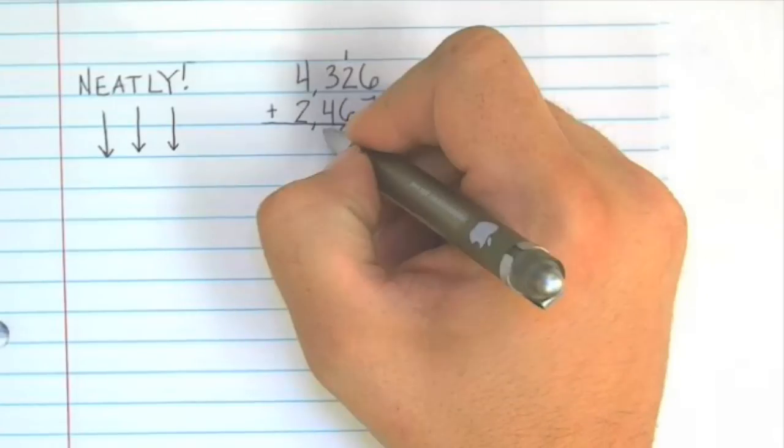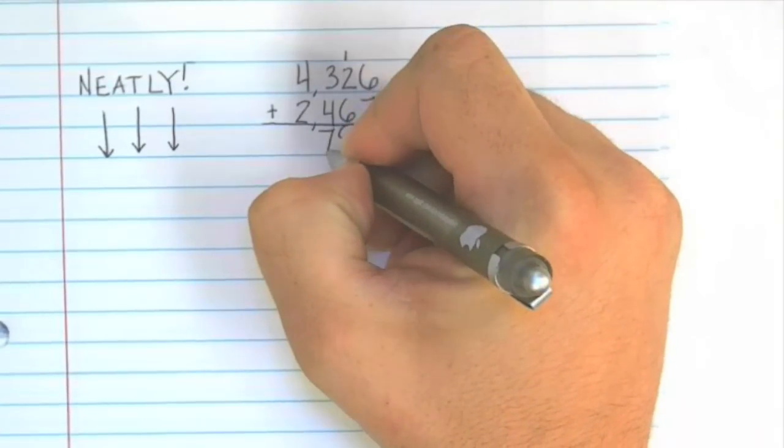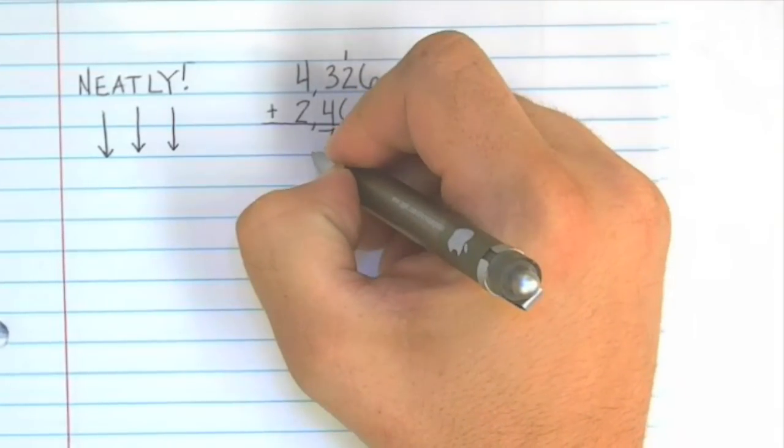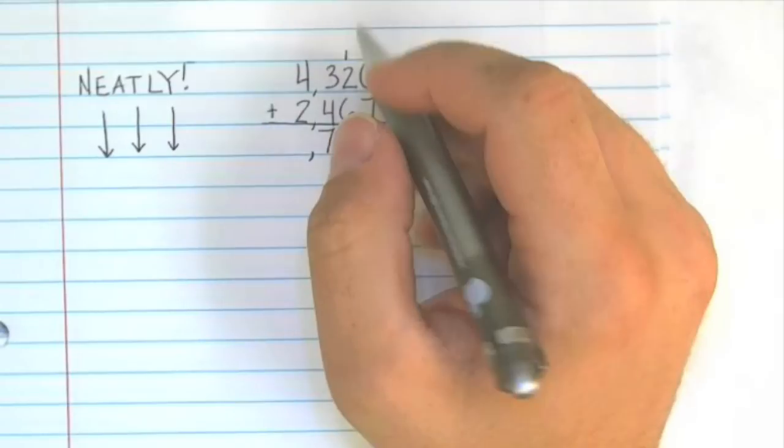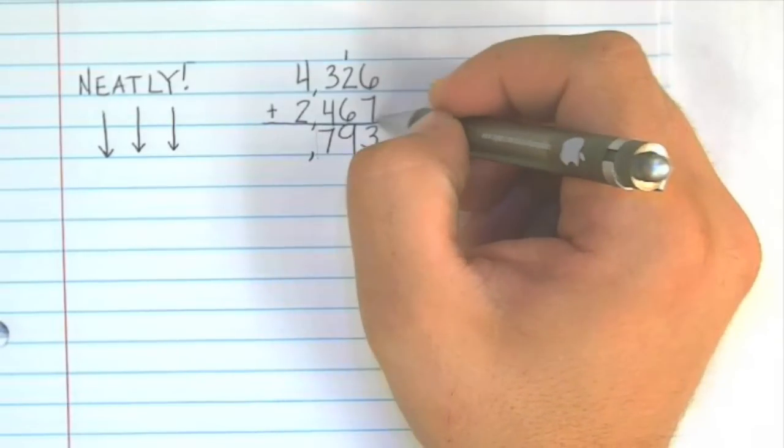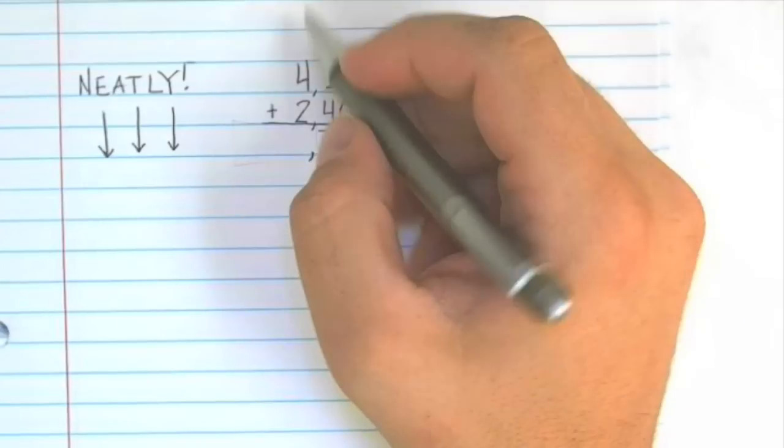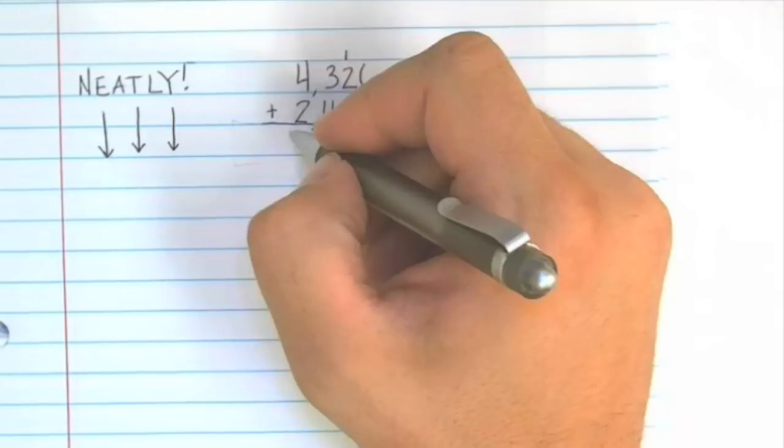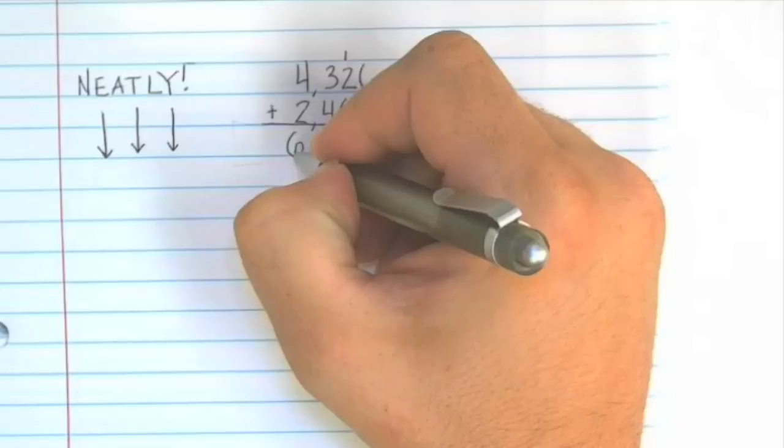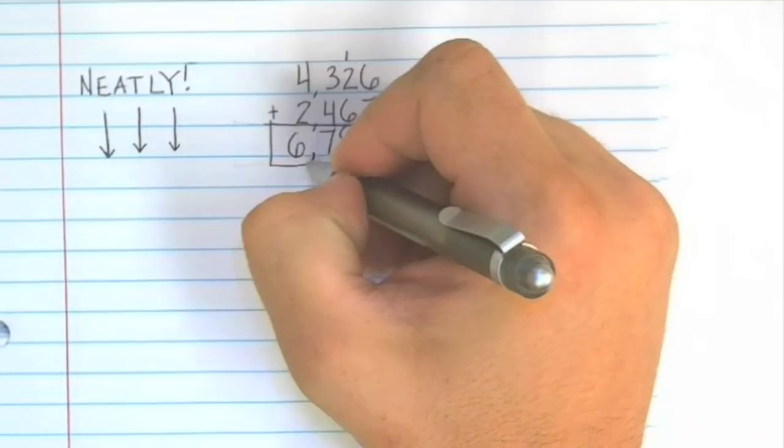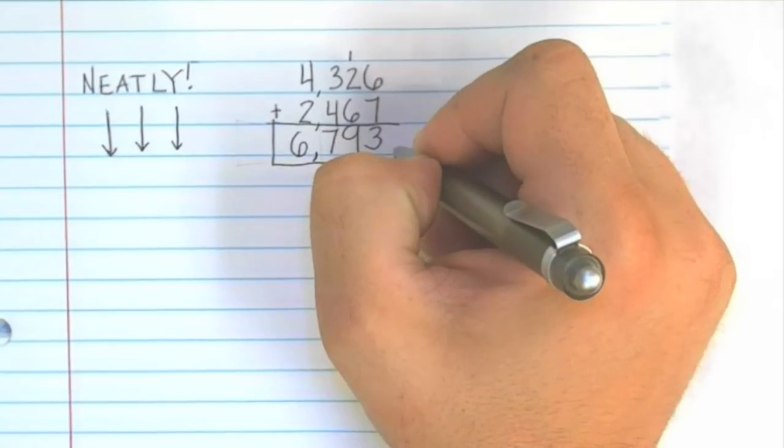And we'll write that number directly below this column of numbers. Now, 3 plus 4 is 7. Bring that comma down here. That separates this period of numbers from the next period. And 4 plus 2 is 6. So the sum is 6,793.